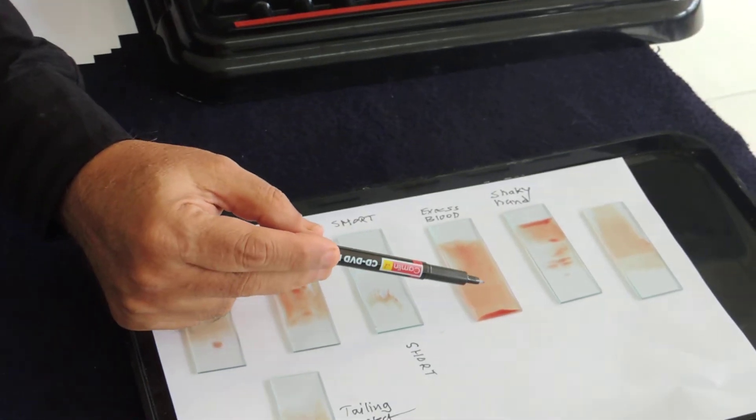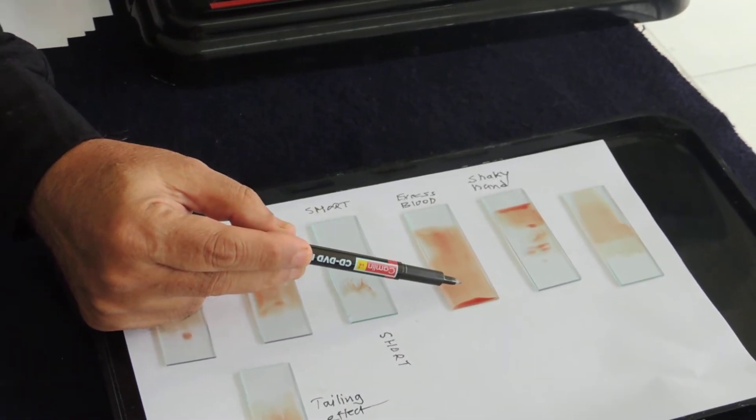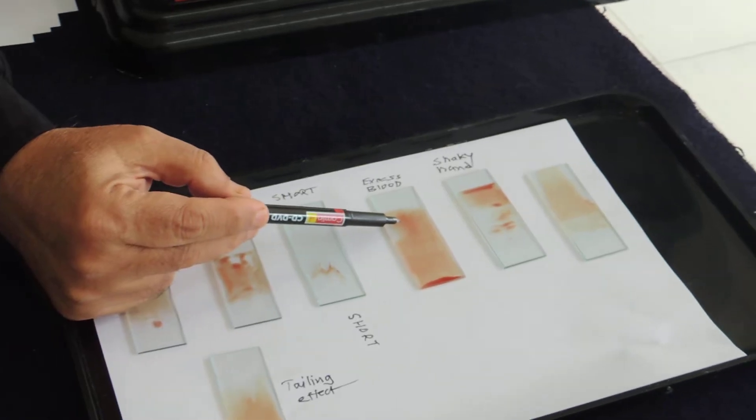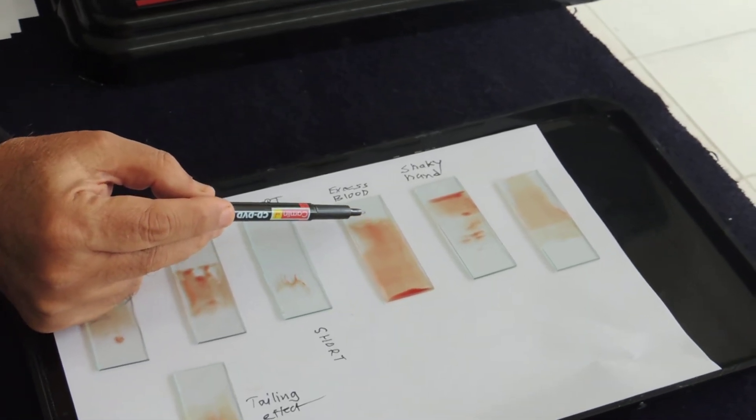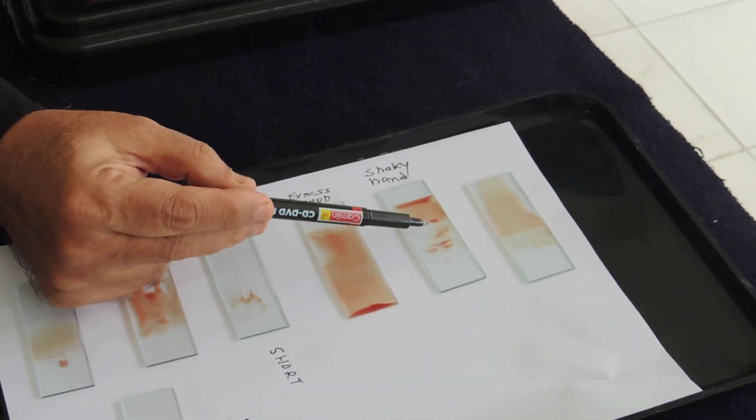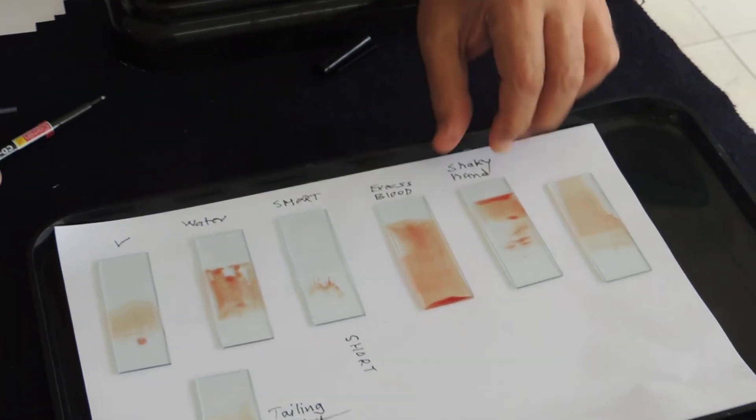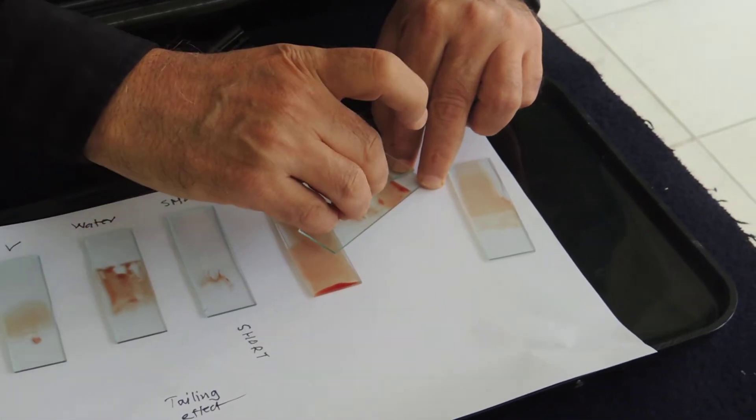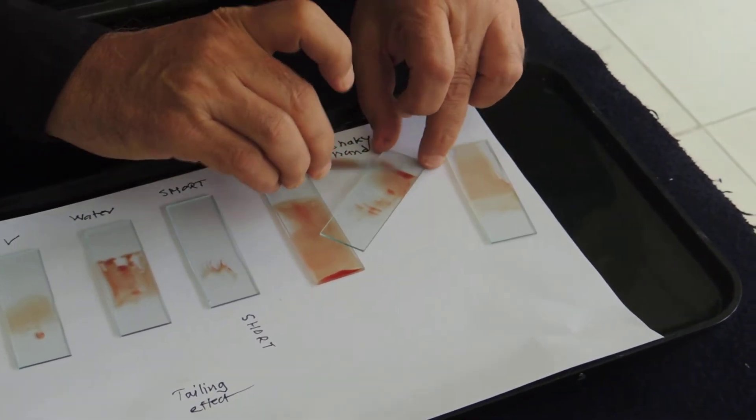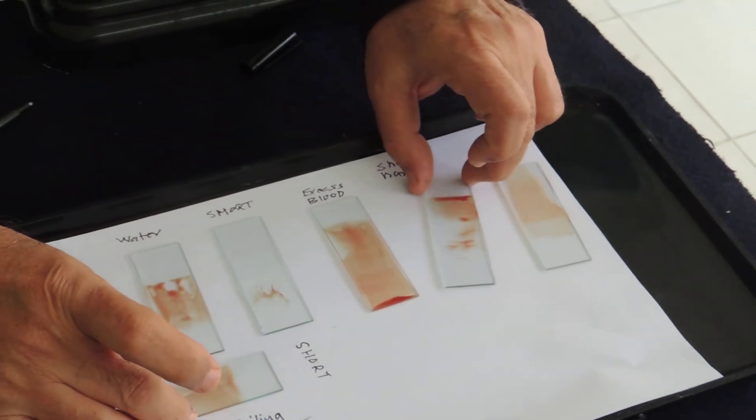If you take excess blood, then this is what happens. You get a very thick smear covering almost the entire slide. Now this is the shaky hand. And what happens in this case is you take the slide spreader and this hits the finger here and such a type of artifact results.